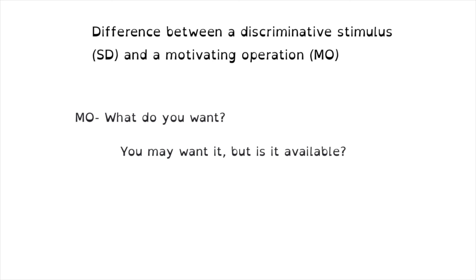That just means that it changes your motivation. Now you may decide you want to save up — your motivation is to save money to then go to the store and pick out a fresh pair of Nikes or order them online. But until you have the money and resources available, you will have to wait. Once you have the money and you go to the store and you see the shoes, the shoes at that point could signal the availability of reinforcement — you can purchase them. So when you're trying to determine the difference between an MO and an SD, just ask yourself: is something available that will provide reinforcement to the individual, whether it's escaping or avoiding something, or whether it's adding something that they like?